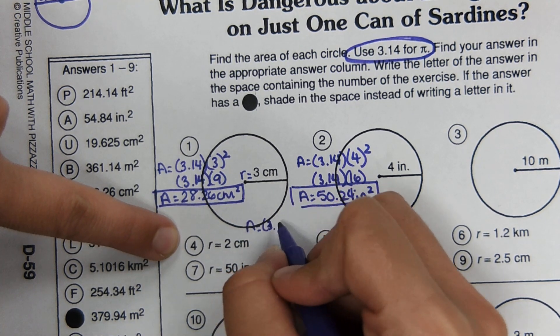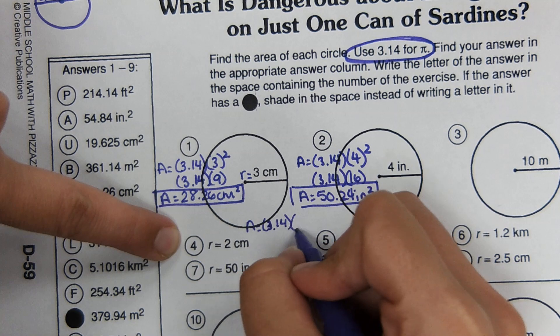So we're still going to do it the same way. Area equals 3.14. The radius, two squared.